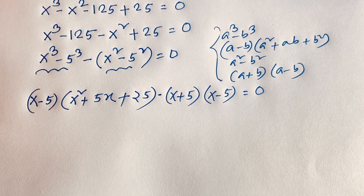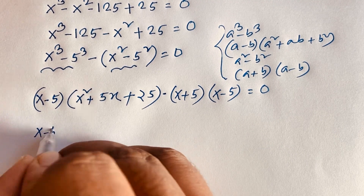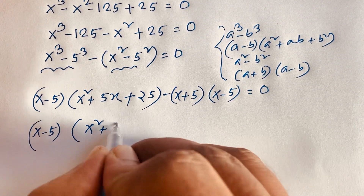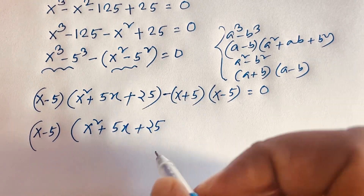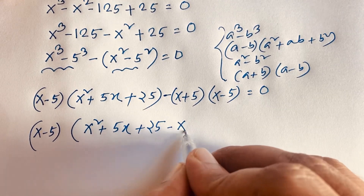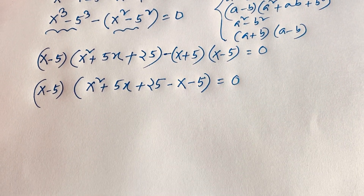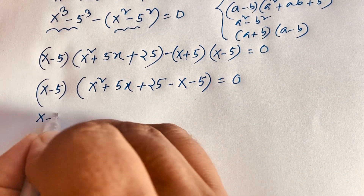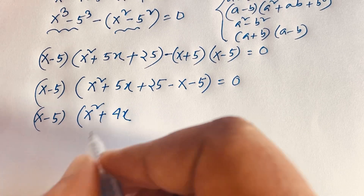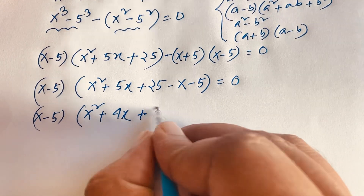Now (x minus 5) is a common factor. Factoring it out gives (x minus 5) times [(x² + 5x + 25) minus (x + 5)] equals 0. Simplifying inside the bracket: 5x minus x is 4x, and 25 minus 5 is 20. So we get (x minus 5)(x² + 4x + 20) equals 0.